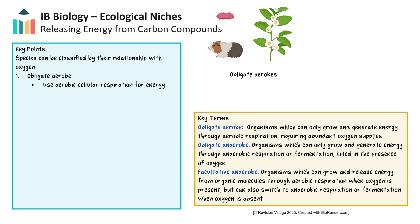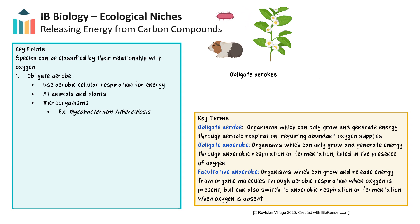Although we can temporarily survive through anaerobic respiration or fermentation when oxygen is scarce, this is only suitable for a short period. Microorganisms can also be obligate aerobes. An example is Mycobacterium tuberculosis, the bacteria that causes TB.